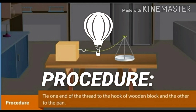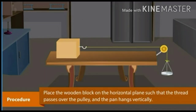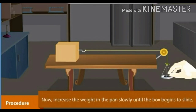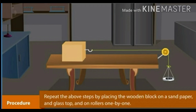Procedure: Tie one end of the thread to the hook of the wooden block and the other end to the pan. Place the wooden block on a horizontal plane such that the thread passes over the pulley and the pan hangs vertically. Put some weight in the pan and gently tap the horizontal surface. Now increase the weight in the pan slowly until the box begins to slide, and note the weight in the pan. Repeat the above steps by placing the wooden block on sandpaper, a glass top, and on rollers, one by one.